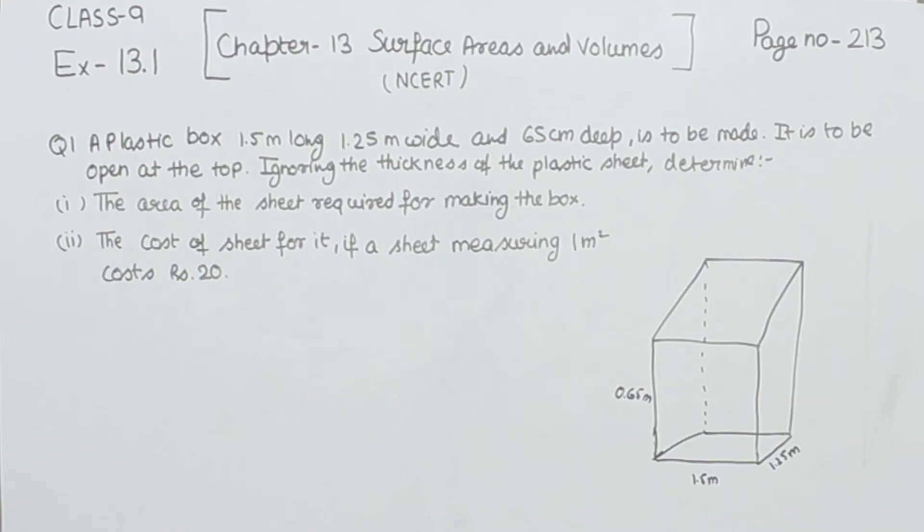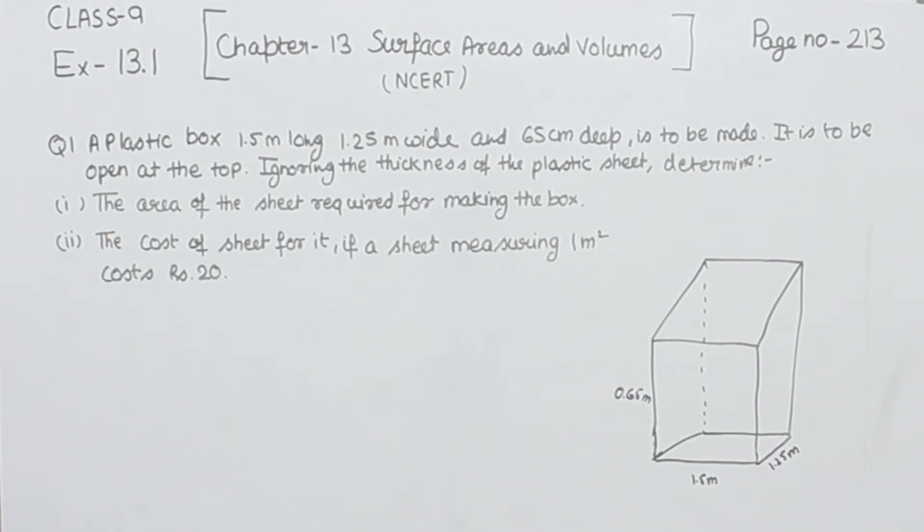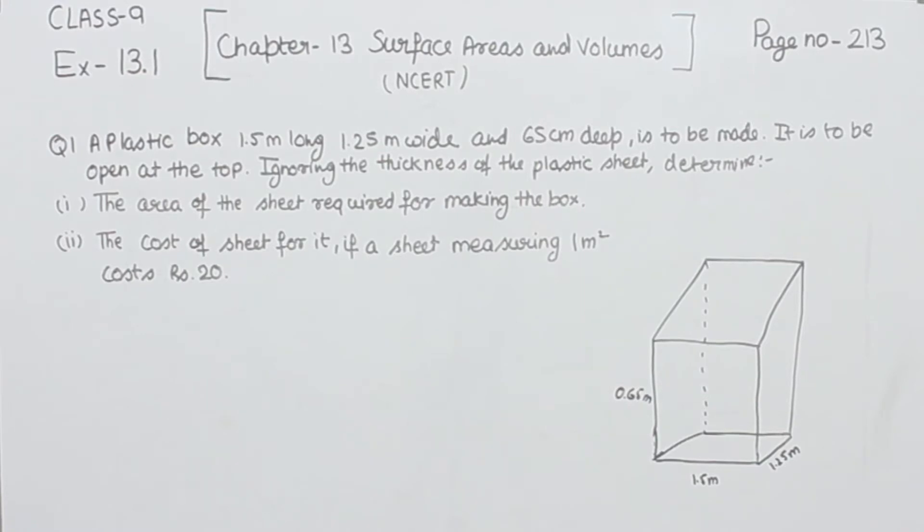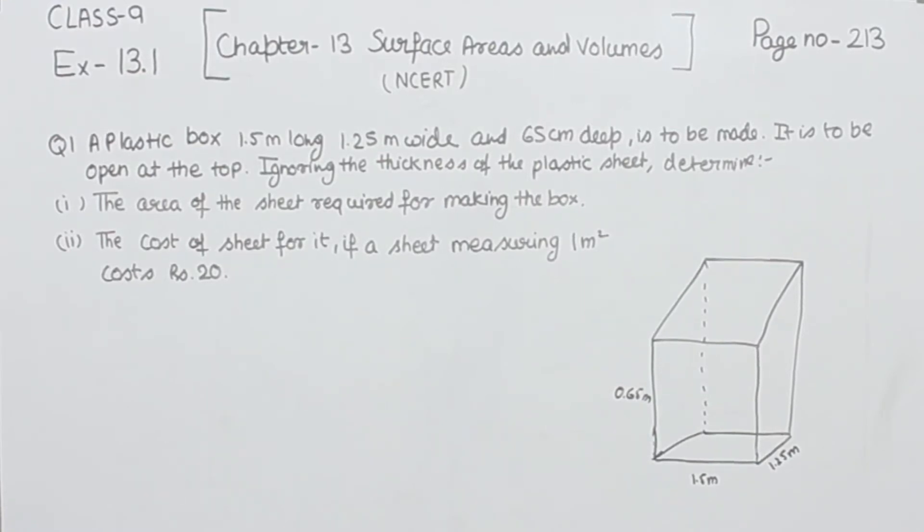A plastic box 1.5 meters long, 1.25 meters wide, and 65 centimeters deep is to be made. It is to be open at the top, ignoring the thickness of the plastic sheet. We have to find the area of the sheet required for making the box and the cost of the sheet if a sheet measuring 1 square meter costs rupees 20.